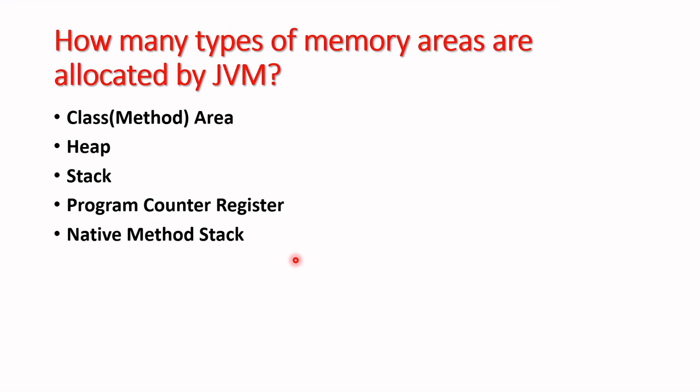The last one is the native method stack. It contains all the native methods used in the program and application. For example, if we are using C or C++ functionality in the application, those things will go into the native method stack. These are all the types of memory areas allocated by the JVM.